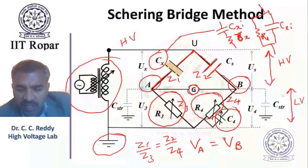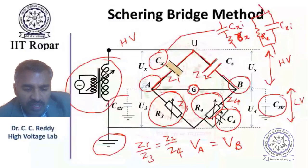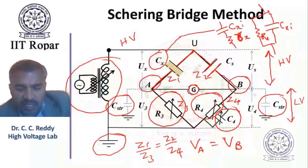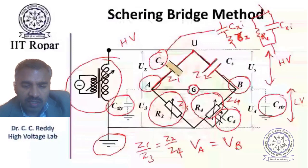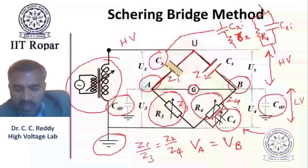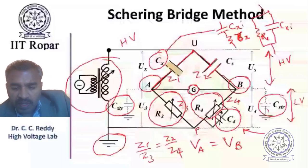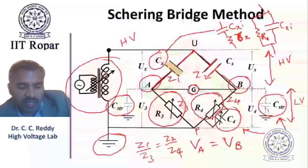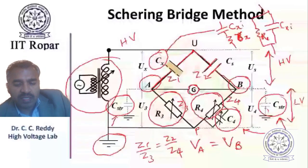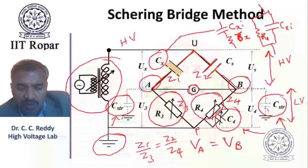In the basic bridge, certain stray capacitances are shown. These stray capacitances will come in parallel with the arms and induce losses. In the low voltage arms, the stray capacitances to ground come in parallel - BP in parallel with one stray capacitance, and AP in parallel with another. So stray capacitances may cause errors in the measurement, and we will see how to avoid them.